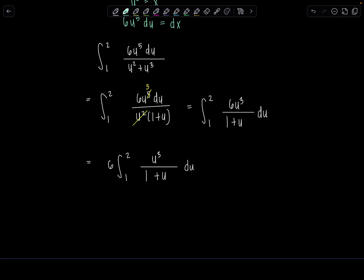I'm going to add and subtract 1 and then factor a sum of cubes so I can cancel. You might say, Professor V, I don't know what that means. Let me show you. So add 1, subtract 1, and then this is going to be 6 times the integral from 1 to 2, u cubed plus 1 over 1 plus u minus 1 over 1 plus u.